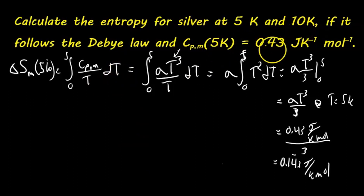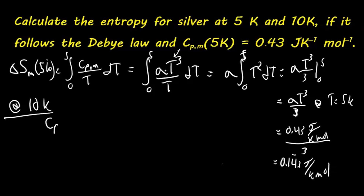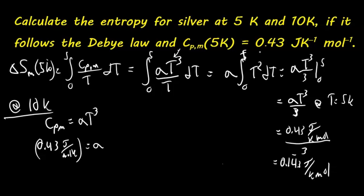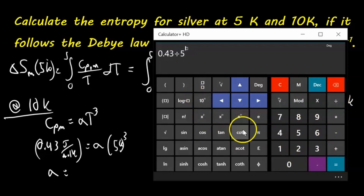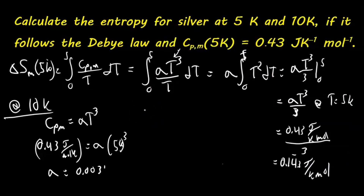Now, to get the entropy at 10 Kelvin, we don't know the heat capacity at that temperature, and we don't know the constant A, so we need to calculate A first. Using C_PM equals AT cubed, at 5 Kelvin we have 0.43 joules per mole·Kelvin equals A times 5 cubed. Solving for A gives us 0.00344 joules per mole·Kelvin to the fourth.